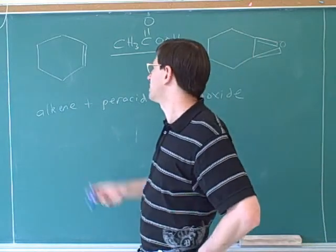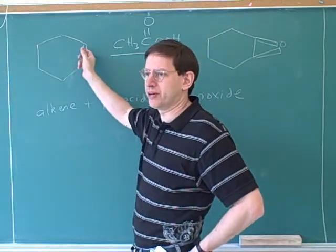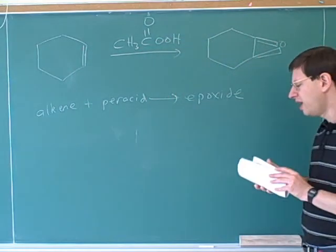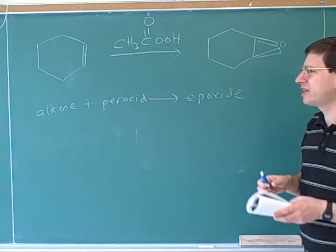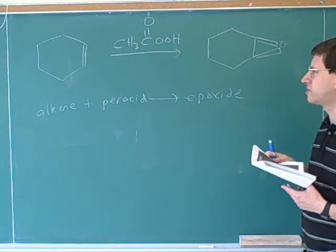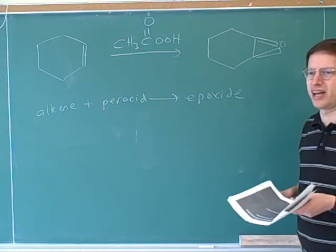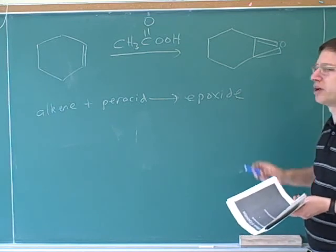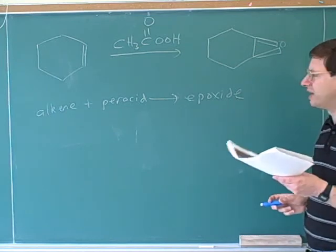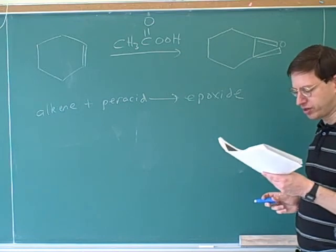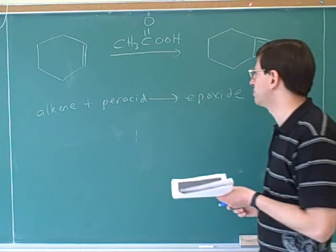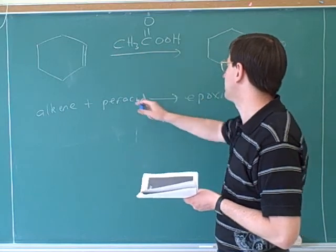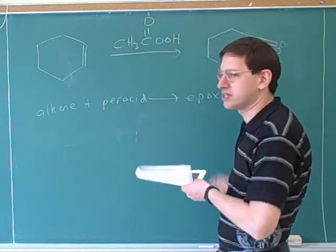That always applies here because the alkene is trigonal planar. Your instructor may not emphasize the two-products question too much, so when in doubt you may get just one product — but it's good to watch out. There might be cases where it matters to consider the two possible products. The important thing is simply that alkene plus peracid gives us an epoxide.